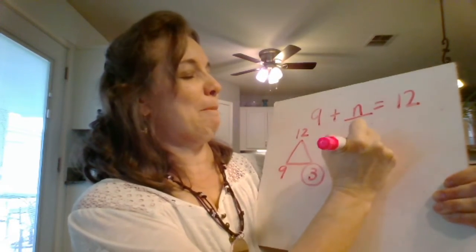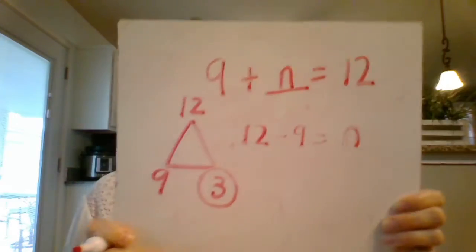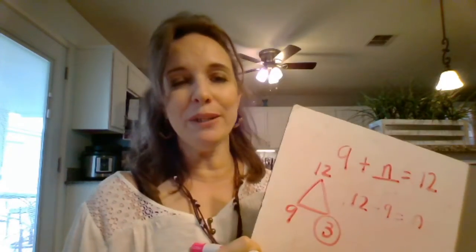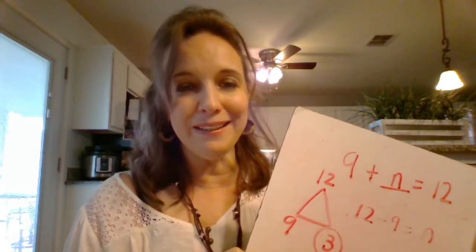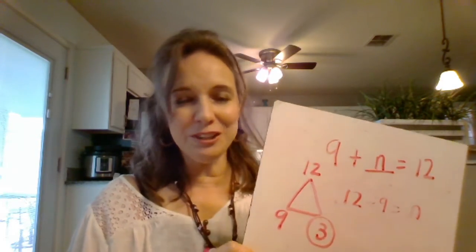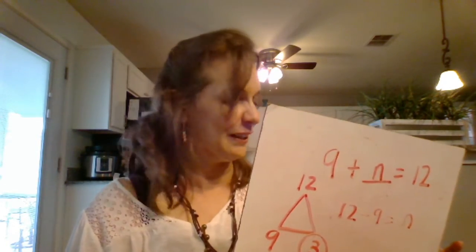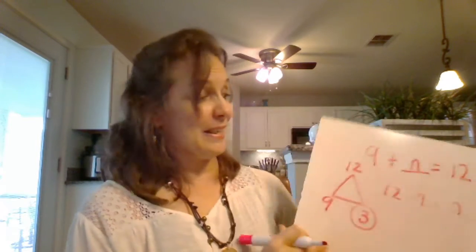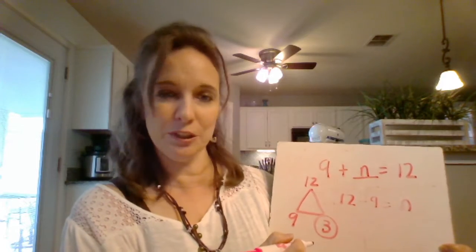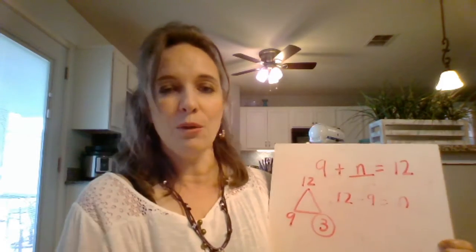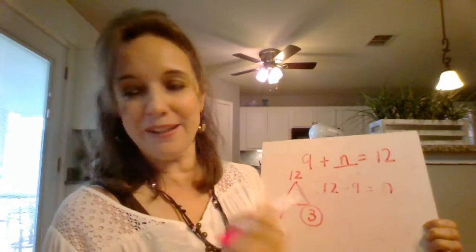12 minus 9 equals n. You can put any letter there — it doesn't matter if you put A, F, B, C, D, or E. It does not matter. It just is representing a blank spot. In this case the letter means 'what number goes right here?' So that's why they use letters to represent what they're talking about. What number goes right there is 3.